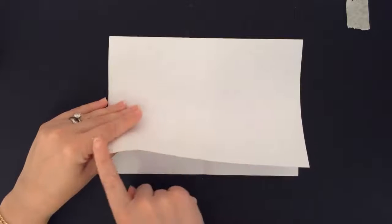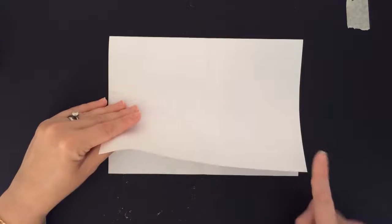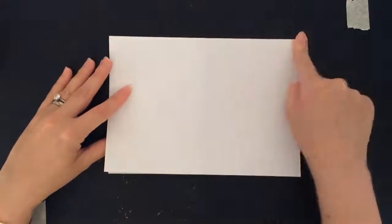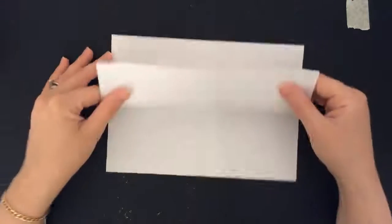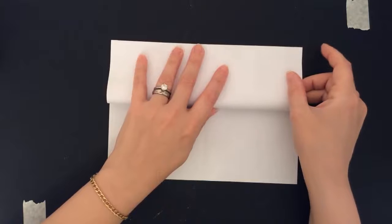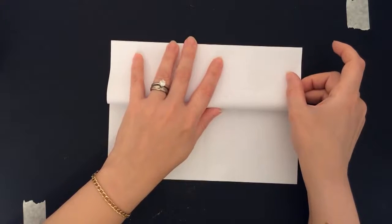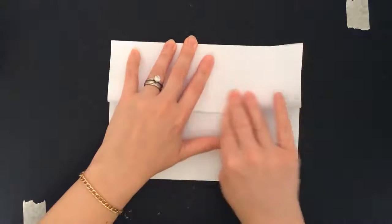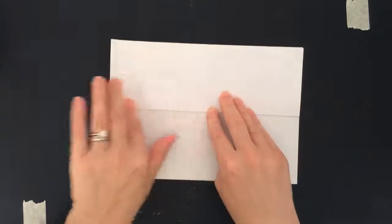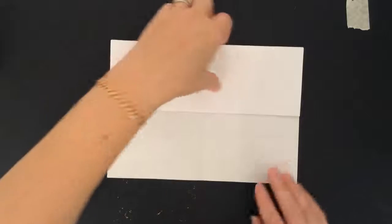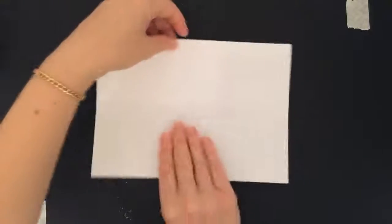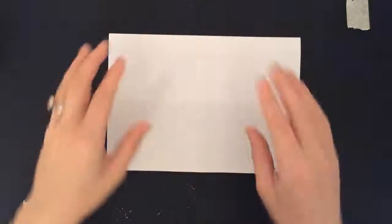I'm going to take that top flap and take this raw edge and fold it up so that it meets the fold. And you want it to be as neat as possible. The neater it is, the more impressive your little book is going to be when it's complete. And crease it really, really well and then flip it over.